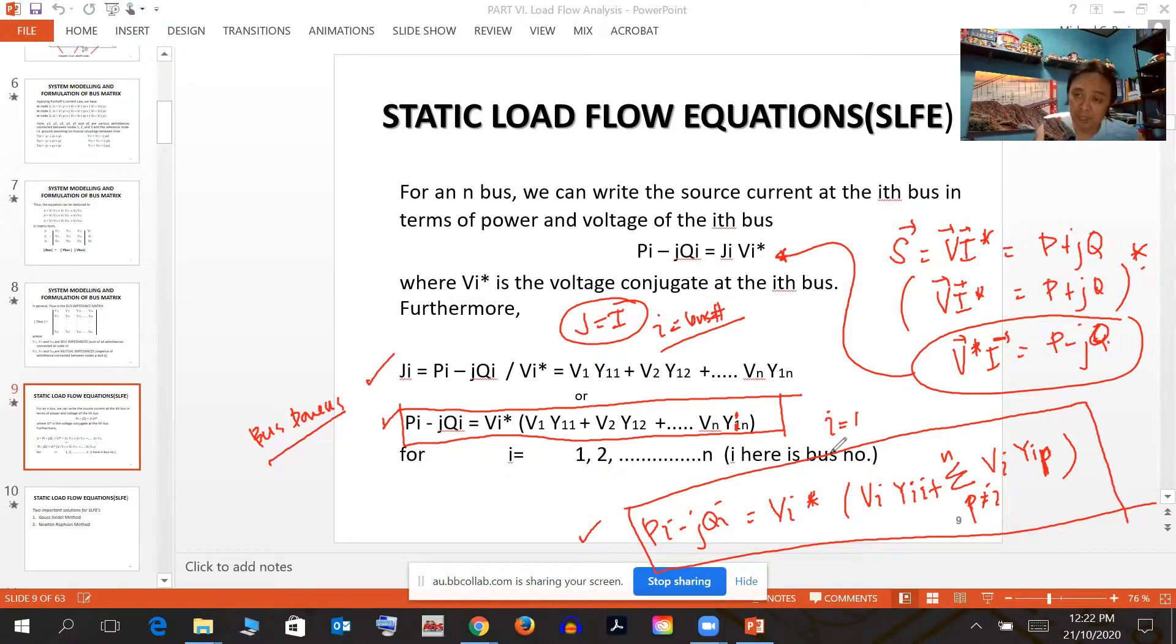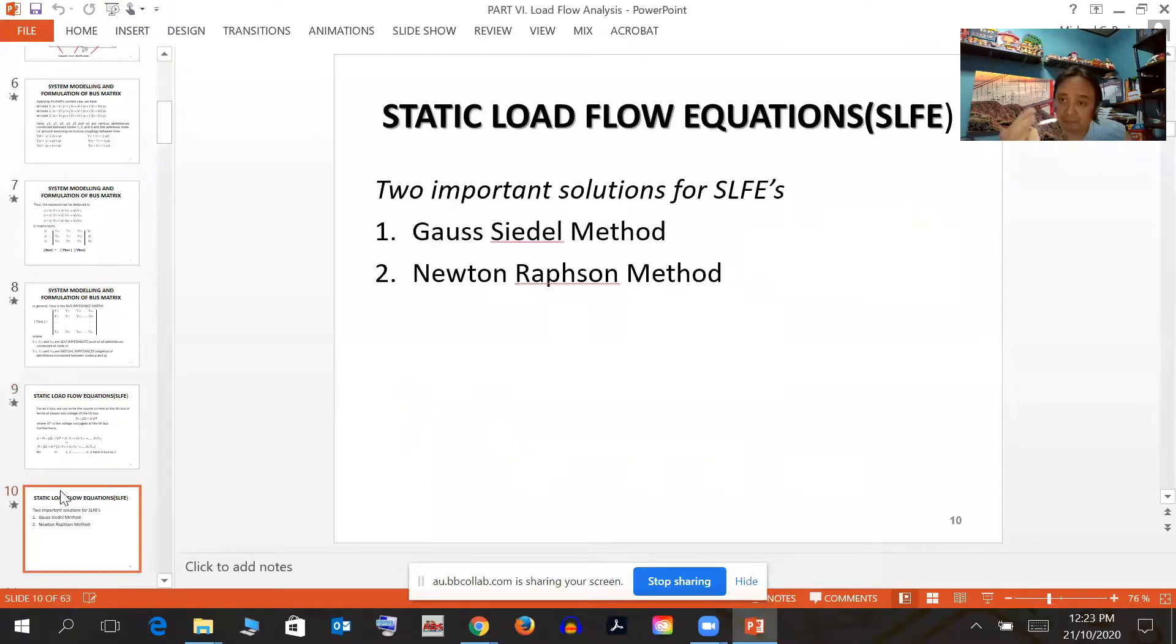From that, we can have a pattern to get the bus powers. The equation is V_i conjugate times V_i Y_ii plus the summation from p equals 1 to N, where p is not equal to i, of V_p Y_ip. You can use this equation.